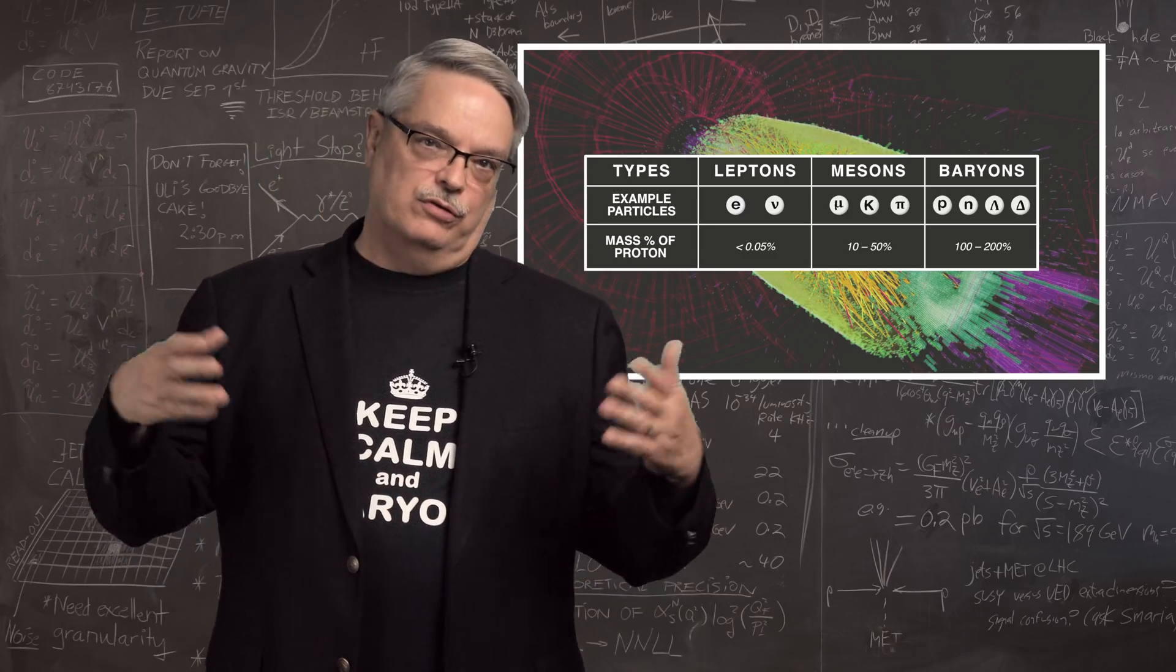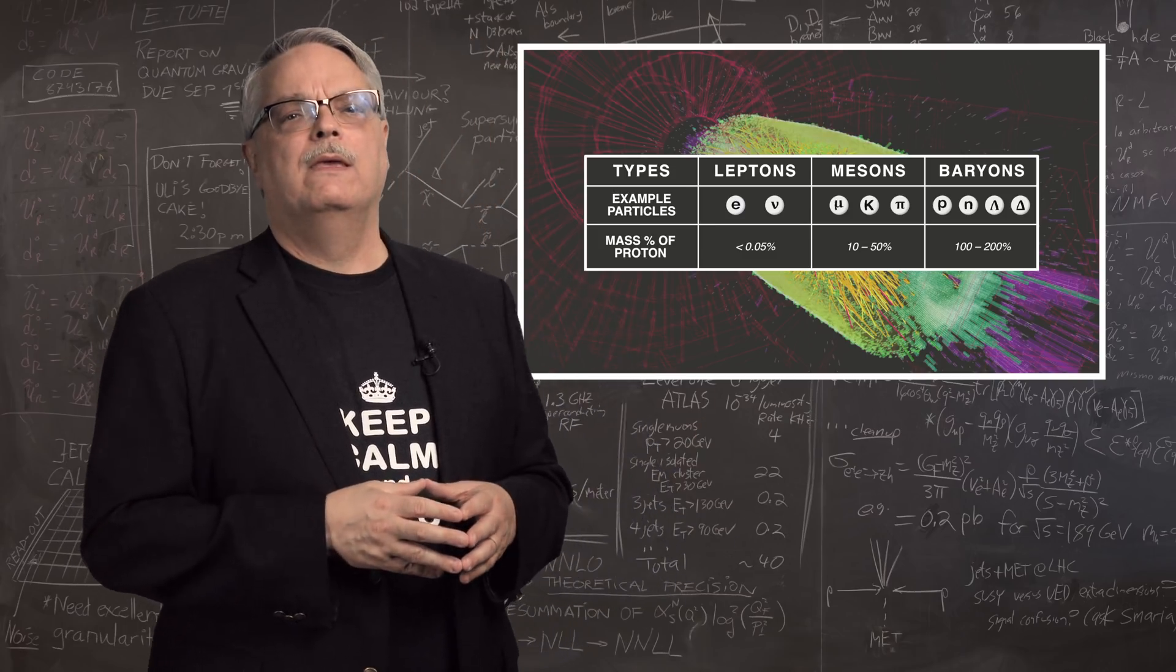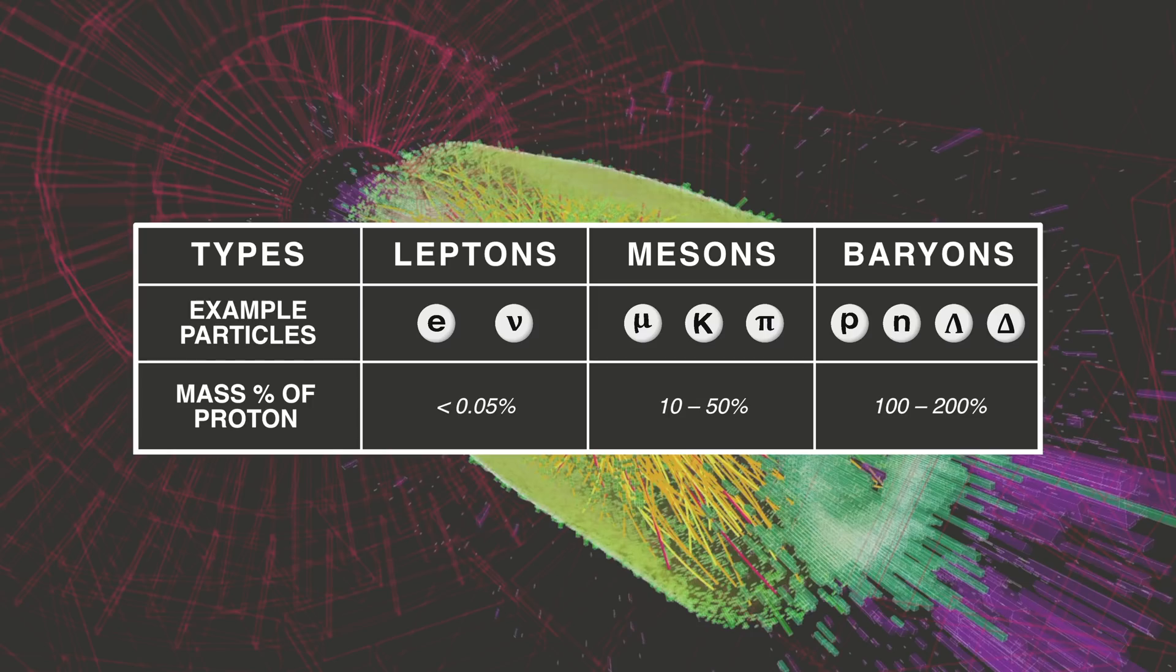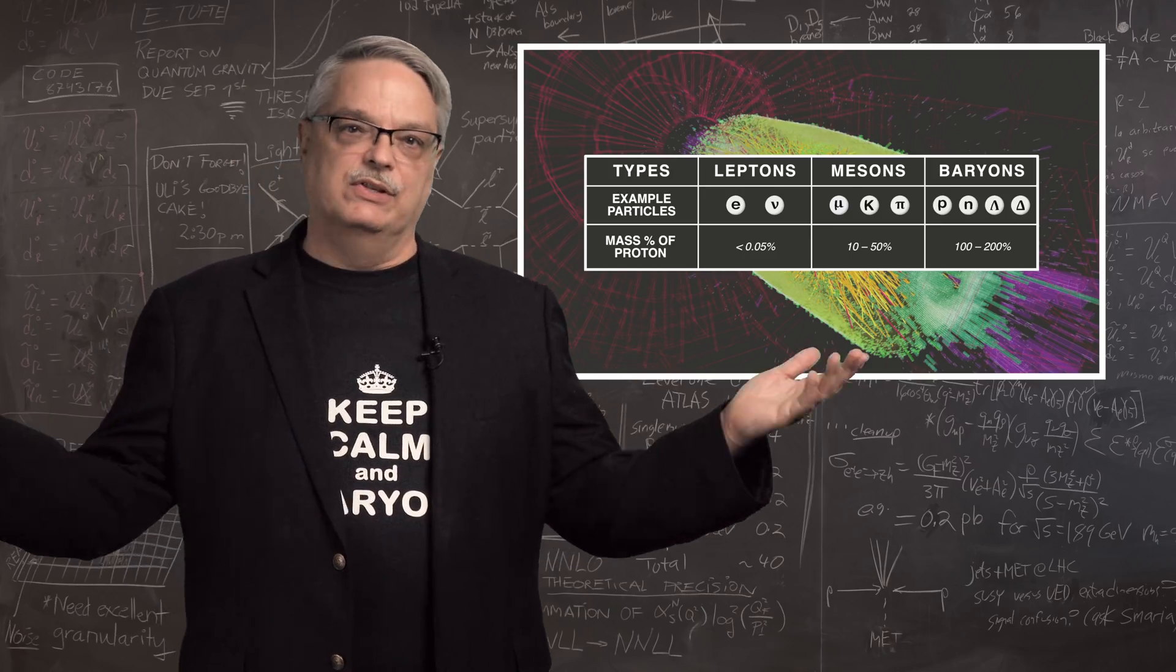In contrast, there were particles that were the mass of the proton or maybe twice as heavy. Because these were the giants of the particle world, they were called baryons, for the Greek word baris, for heavy. Again, a sensible name.